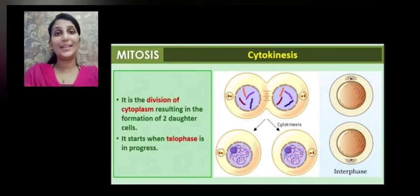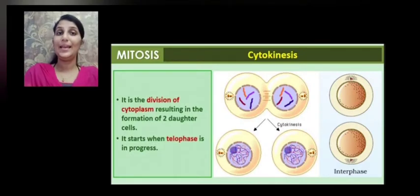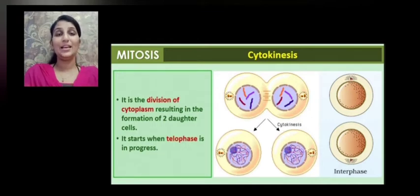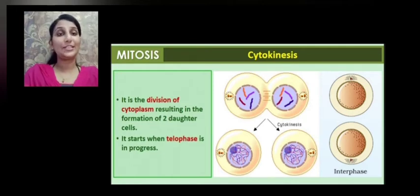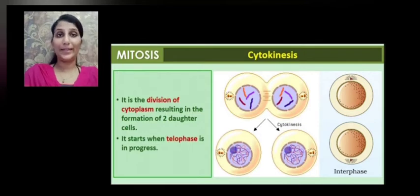Dear children, welcome to the next session on the chapter cell cycle and cell division. In the last module, we had learned about karyokinesis, which involves the division of the nucleus and it involves prophase, metaphase, anaphase and telophase. And after telophase, two daughter nuclei are obtained.